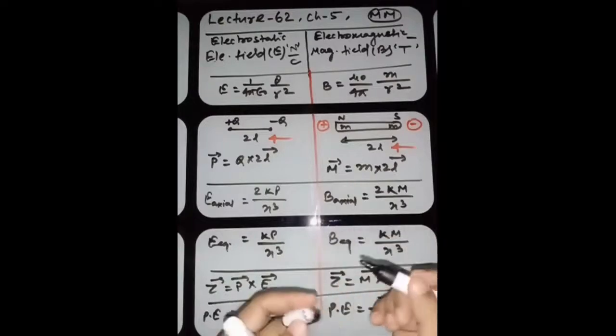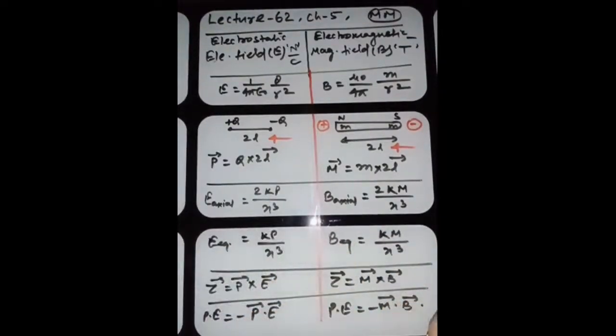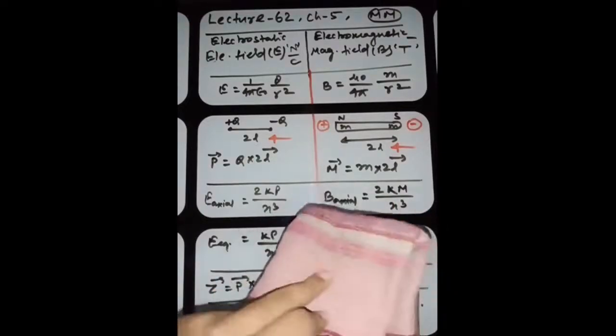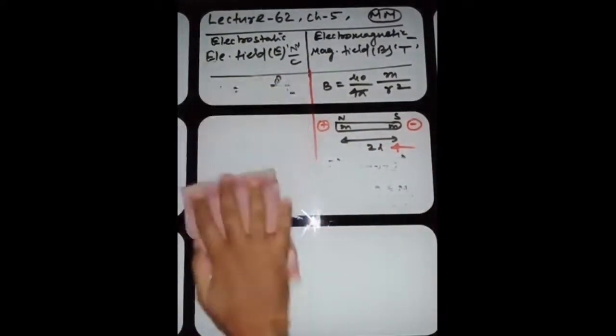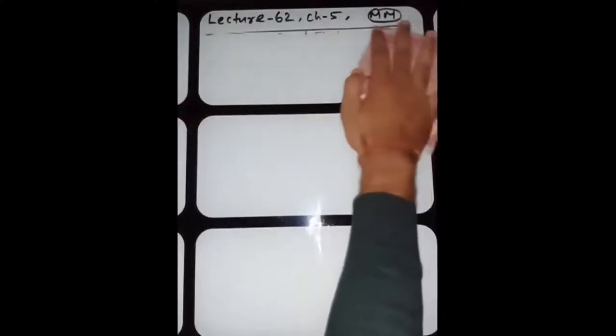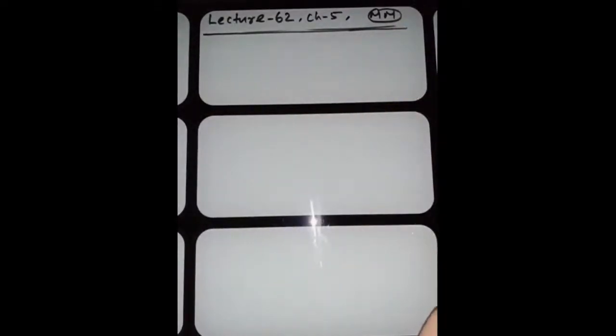In this way you can remember the formulas for both chapters through the electrostatic analog. Now we will study earth magnetism, which is very important.